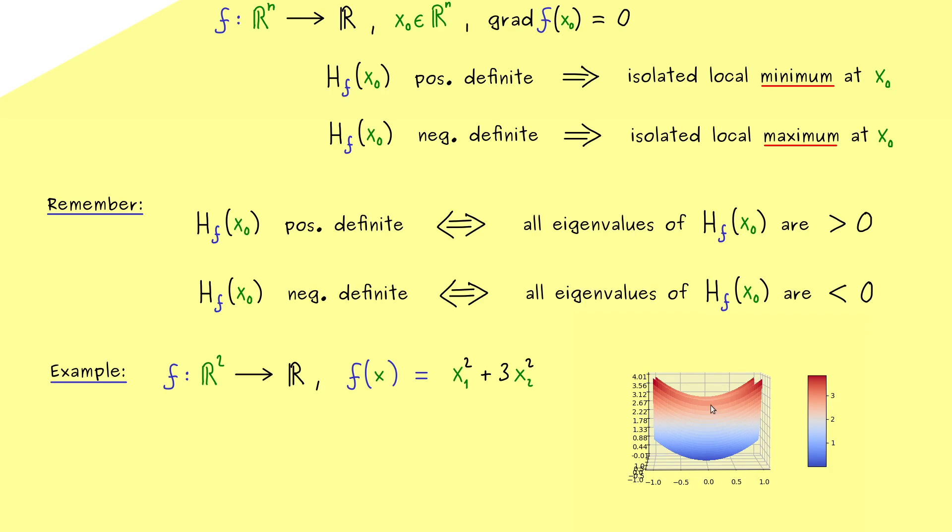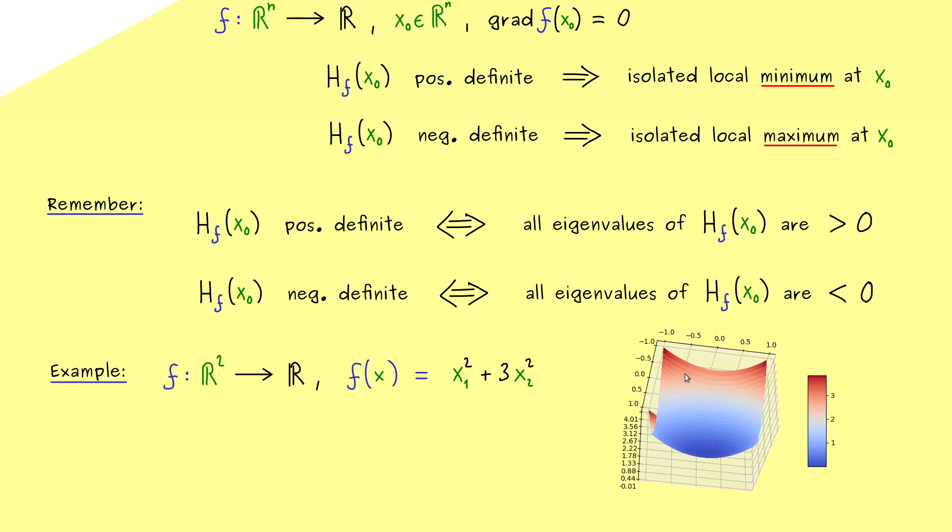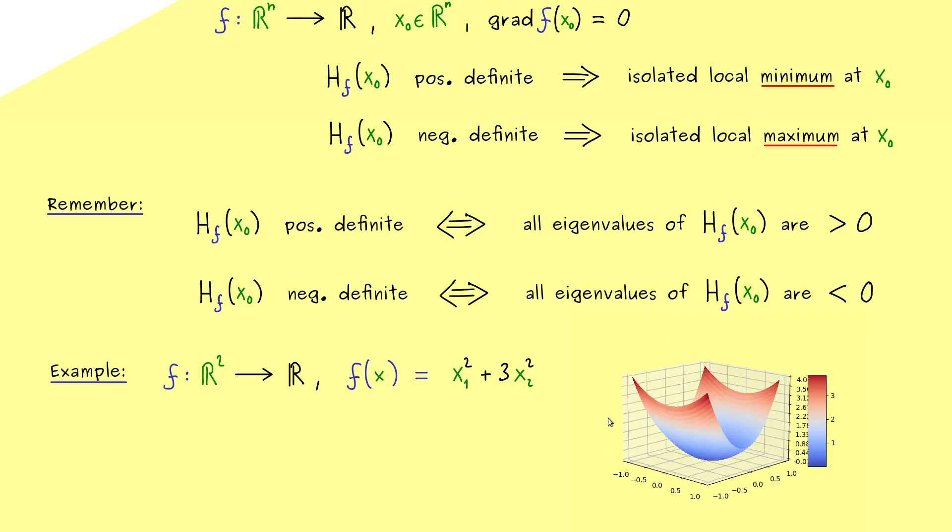So this is our function here and I would say to visualize it let's simply plot it using Python. Now not so surprising this should look like a parabola if we only look from one side. Moreover from the other side it should look similar so it's also a parabola but we already see it's a different one. Indeed on one direction we have a 1 as a factor and on the other one we have a 3.